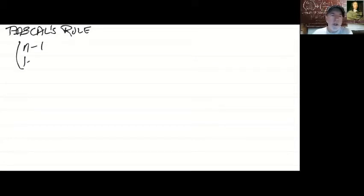Pascal's Rule or Pascal's identity. We've got the sum of two binomial coefficients and I'm going to represent them vertically and you'll see why in a moment. So we've got n minus 1 choose k minus 1, and I'll put a little plus sign here.